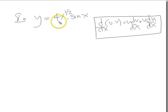Okay then, we've got y equals 4x to the half times sine x. They're both standard derivatives, so we can write that as u times v, can't we?